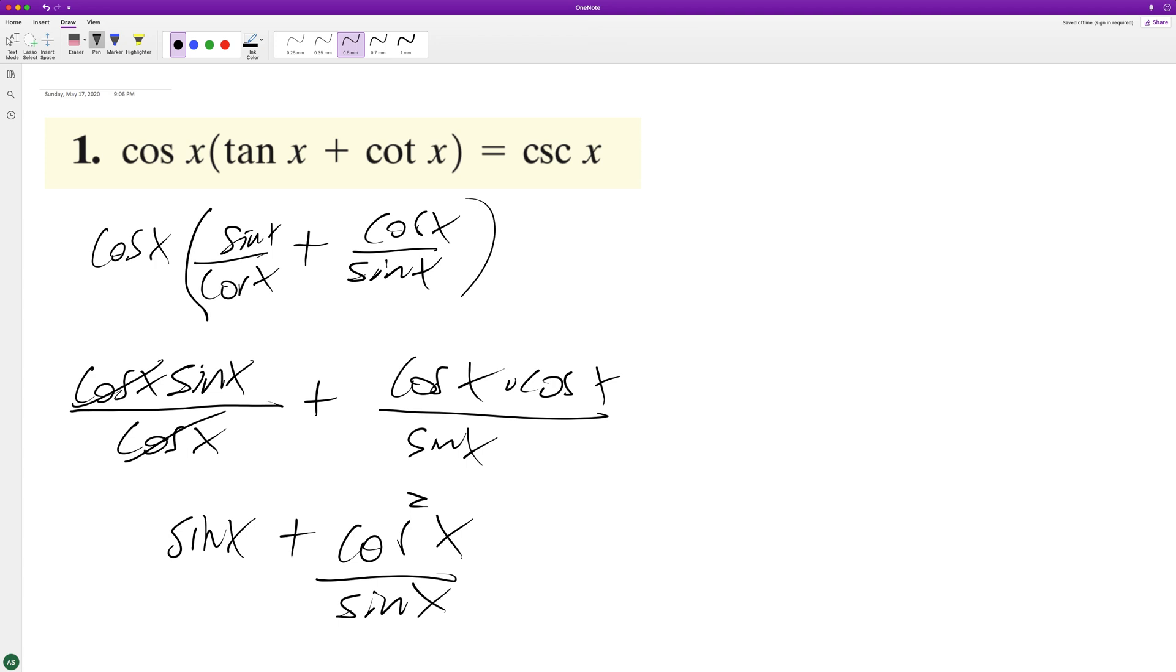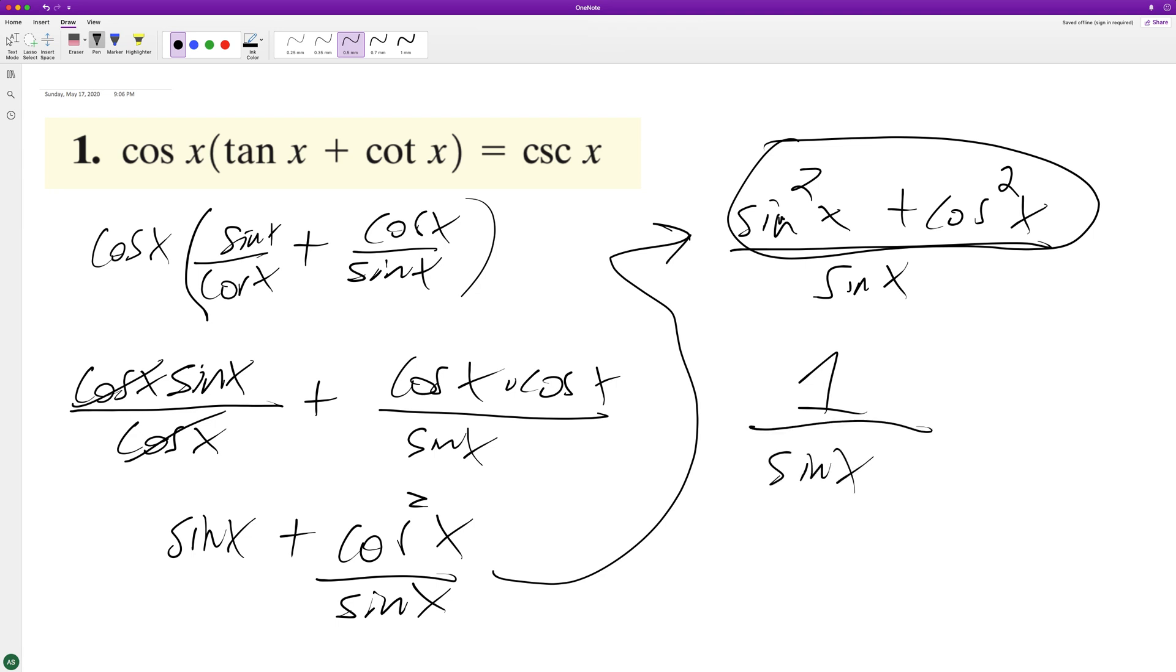What we can do is get a common denominator of sine x. And when we do that, we end up with sine squared x plus cosine squared x over sine of x. And this right here is equal to 1 over sine of x. And another way to say 1 over sine of x is the cosecant of x.